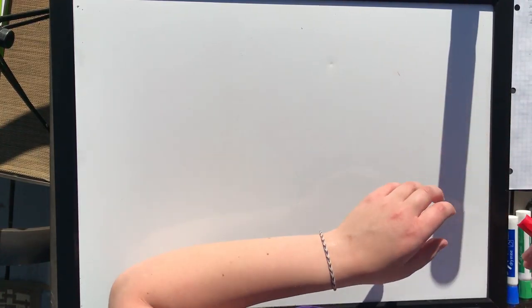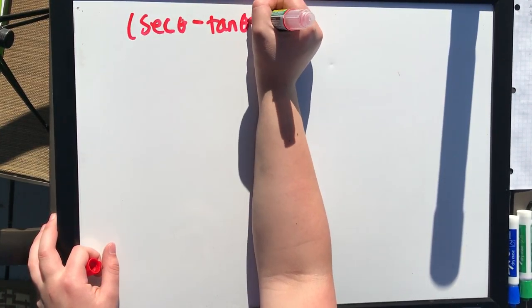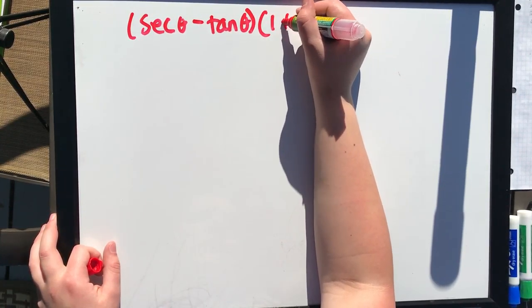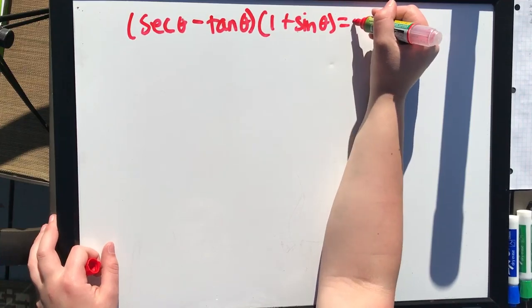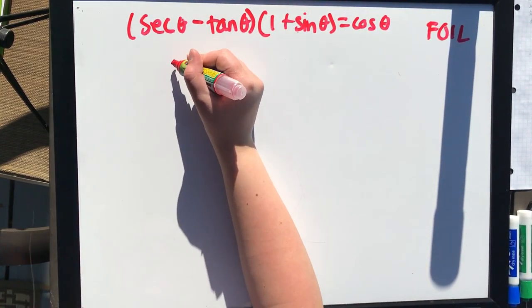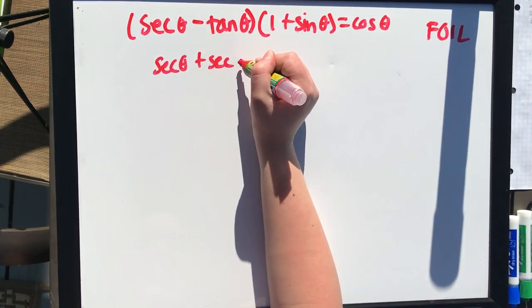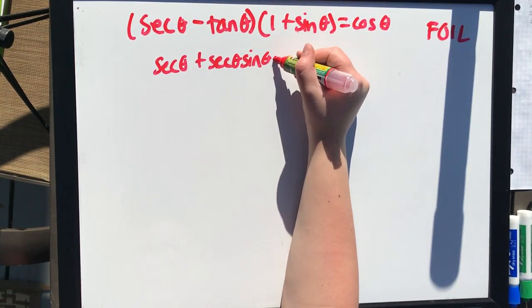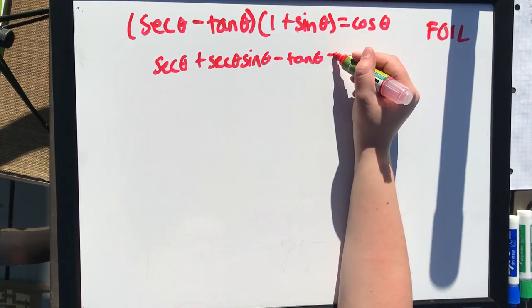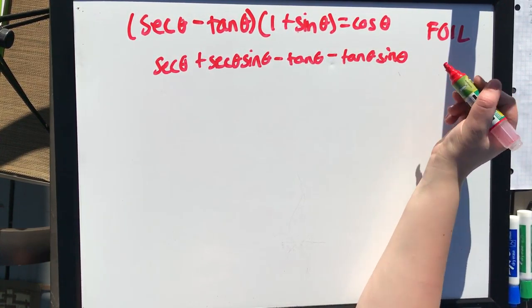For another medium example, sometimes when verifying identities you'll have to FOIL. We have (secant theta minus tangent theta)(1 plus sine theta) equals cosine theta. Let's FOIL: multiply the first terms to get secant theta, the outer gives secant theta sine theta, the inner gives minus tangent theta, and the last gives minus tangent theta sine theta. That equals cosine theta.